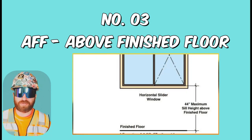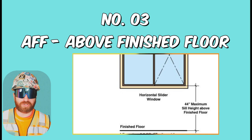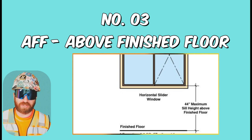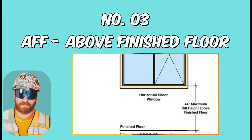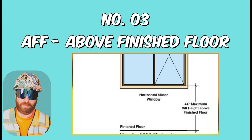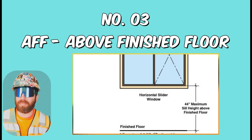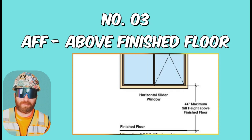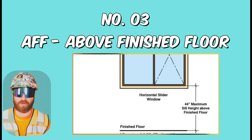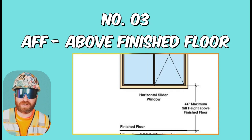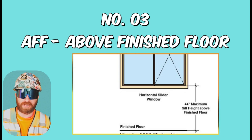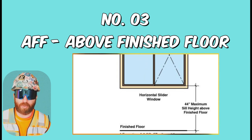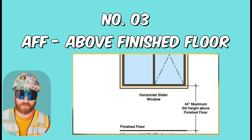AFF, or Above Finished Floor. The construction drawings should provide you with an elevation that your slab or finished floor will be at. For instance, if you have a mirror that says 4' AFF pointing to the bottom of the mirror on your plans, it just means that the bottom of the mirror should be installed 4' above the finished floor elevation. It's just a baseline point of reference to use.